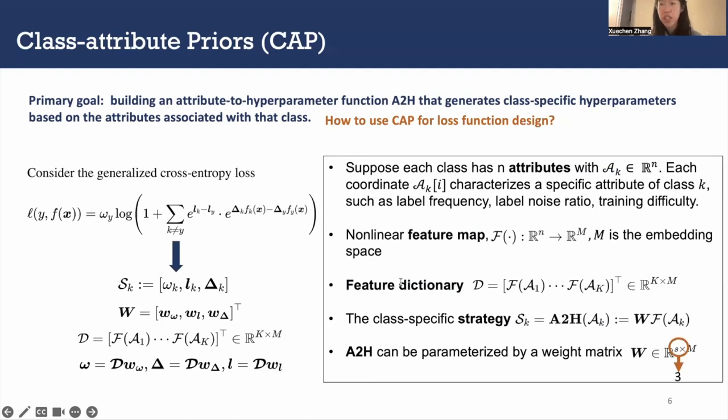The size of W is only influenced by the number of hyperparameters we use and the feature map size we design. This is actually important because the total number of classes, which is K, could be very large.